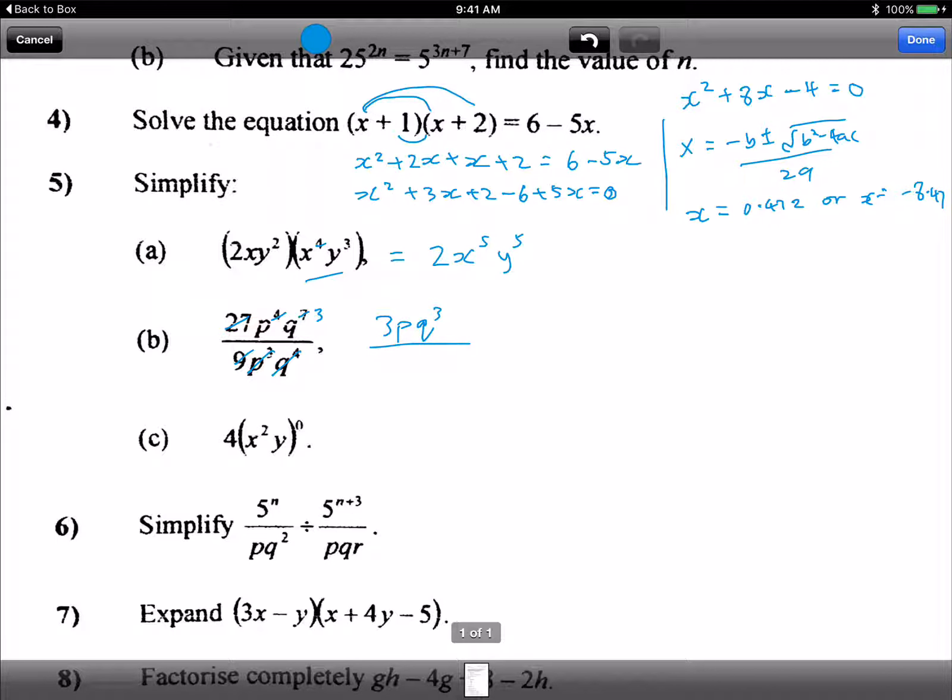Okay this answer, then the next one. Now this is power 0. Anything to the power 0 will give you what? It's 1. So it's 4 times 1 equals 4. Remember anything to the power 0 is 1, so the answer is 1.